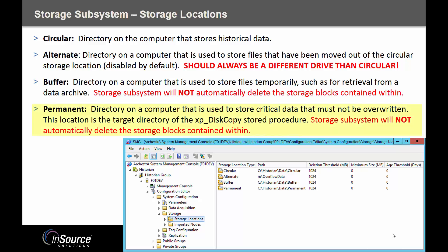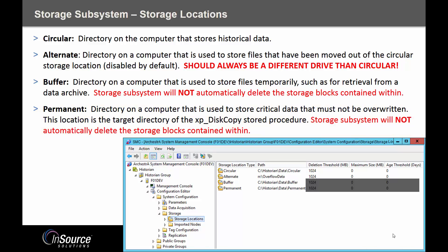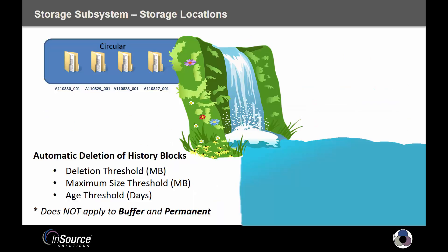The permanent directory is very similar to the buffer in that you have to manually place a history block there. However, the history blocks you place in permanent should always stay there — they're not there temporarily. The automatic deletion mechanism based on age or hard drive space does not take effect on any history blocks placed in buffer, nor does it affect any history blocks in the permanent directory.